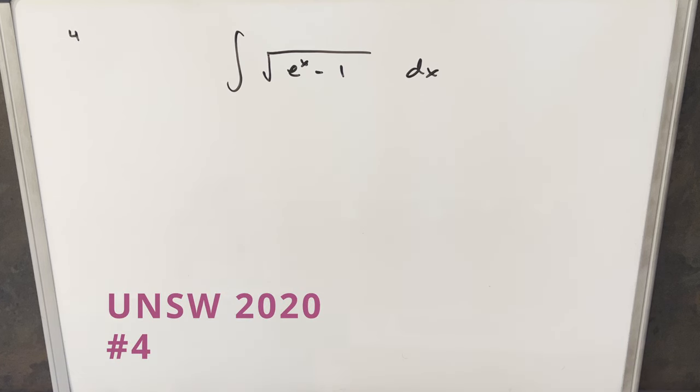Okay, we have here another integral from the UNSW integration B from 2020. This was problem four. We have the integral of the square root of e to the x minus one dx.